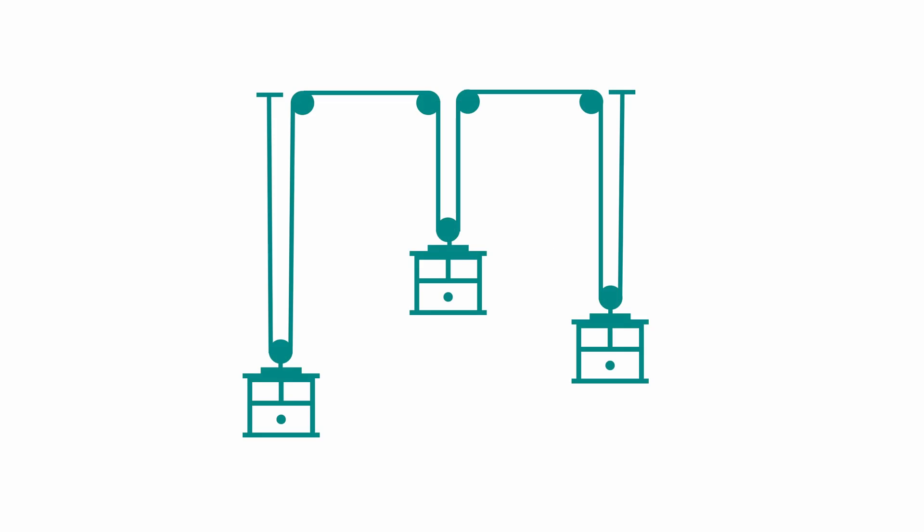Imagine three cars connected by a single cable. Because the cable length is fixed, if the first car moves up by some distance, the combined downward movement of the second and third must equal that same distance. For example, the second car could move down exactly that amount while the third stays put or they could split it between them in any proportion.